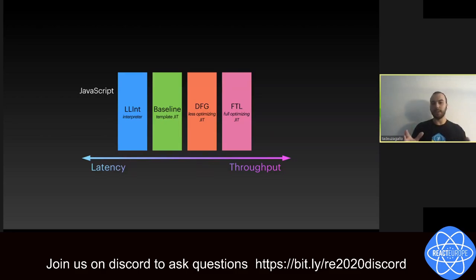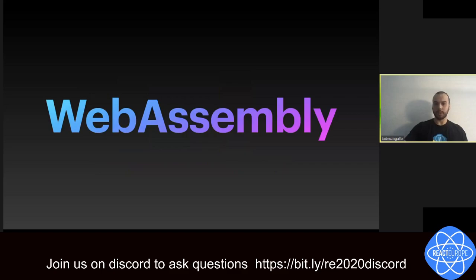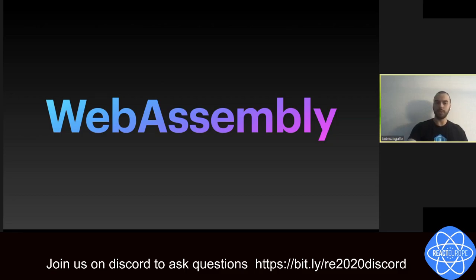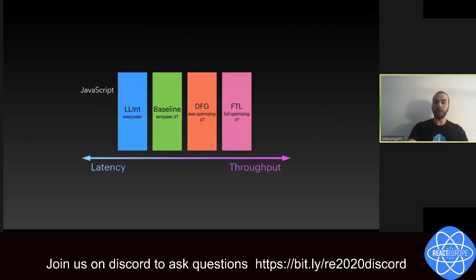That was the state of the VM when WebAssembly came along. Now we have to run a language that's completely different — statically typed, has a binary format instead of text — and it might look like we'd have to build an entirely new VM for it. But like I said at the beginning, I was super surprised at how much was reused. The FTL can do a lot of the optimizations a C compiler would do, and WebAssembly has as much typing information as C. So maybe we could just reuse it.